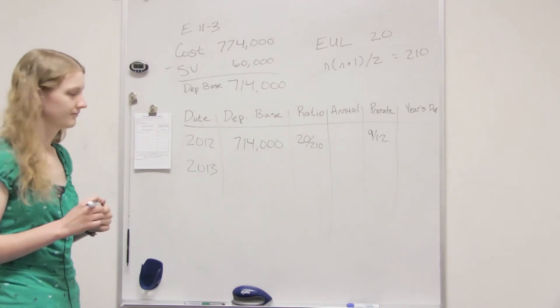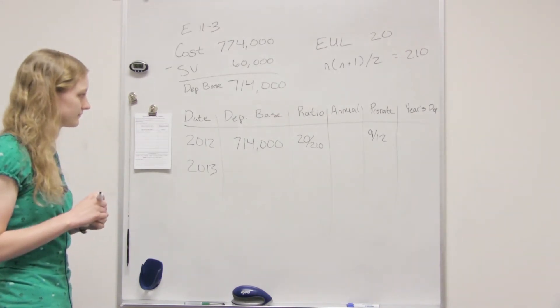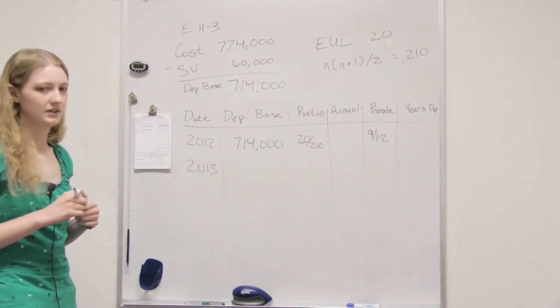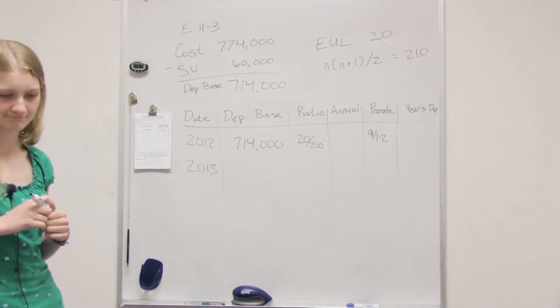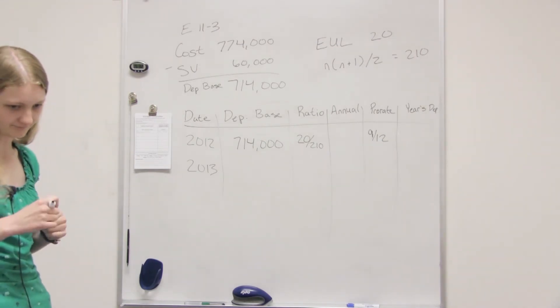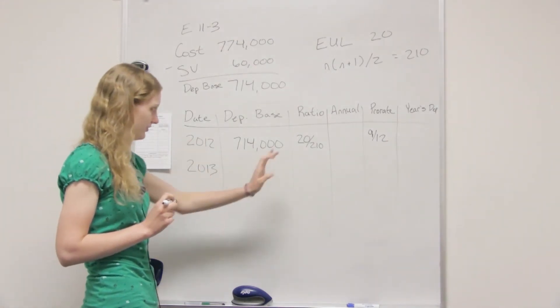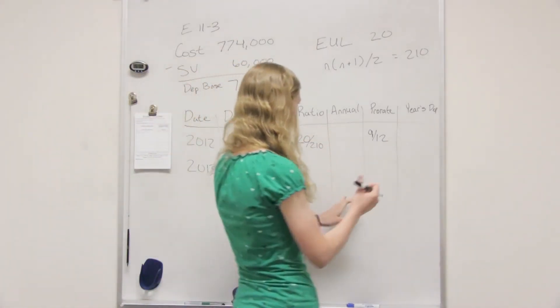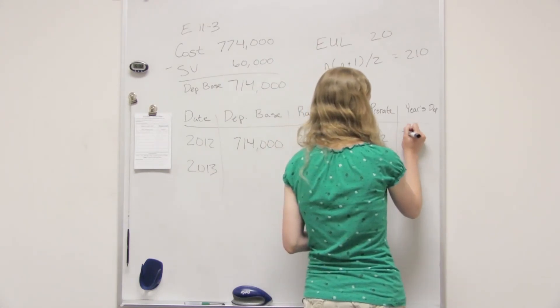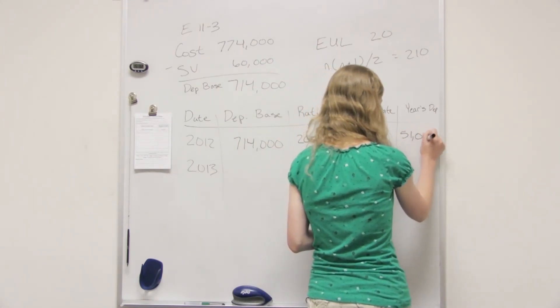And then 714. Does the depreciable base change or does it stay the same? It's going to stay the same. Okay. So yeah, I'm just ignoring the annual. So we should get a year depreciation of 51,000.